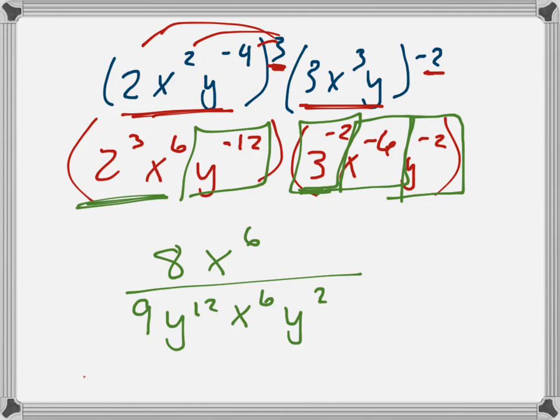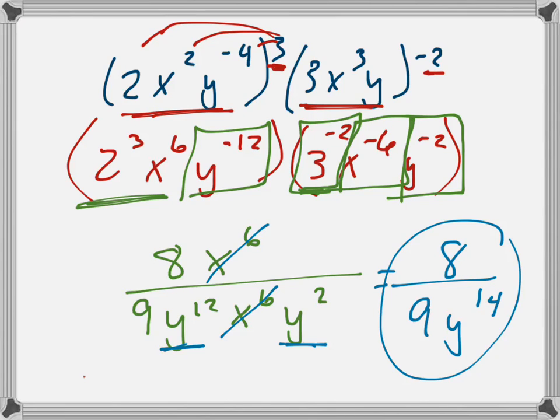Now I made everything positive, and now I like just to cancel factors. So the 8 and the 9 don't cancel. The x to the sixth, those all cancel all the way. And the y's, how many y's do I have? 14. I have 14 left, and where are they? In the bottom. And there's your simplified answer.